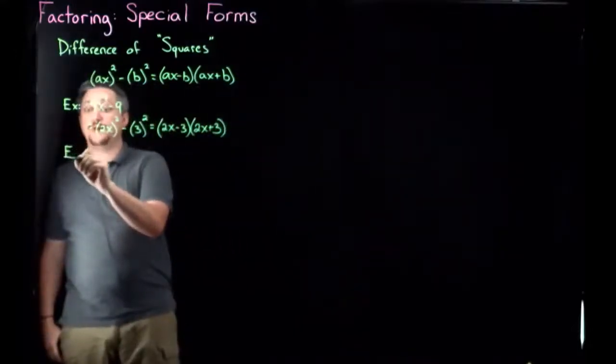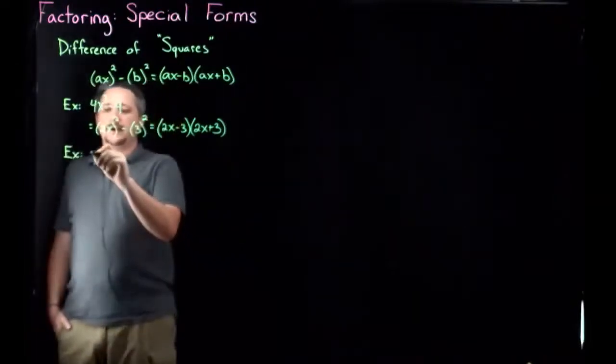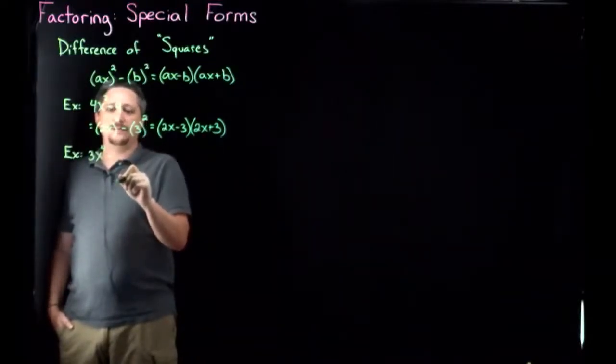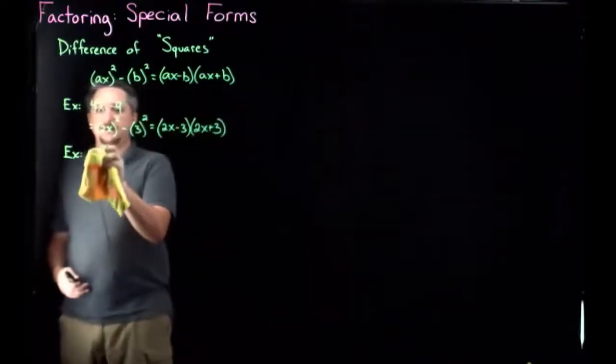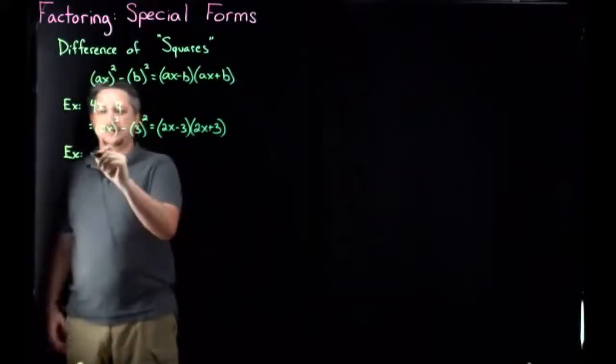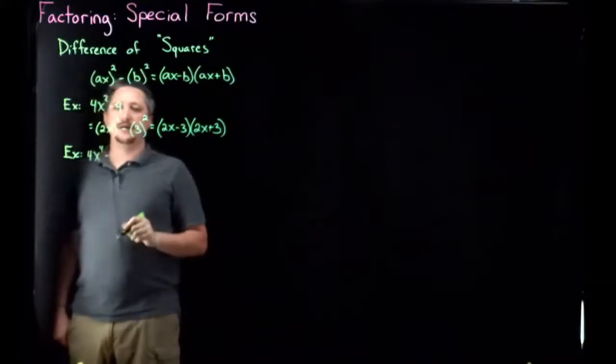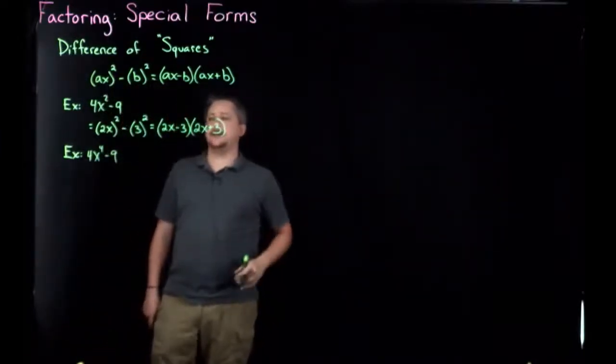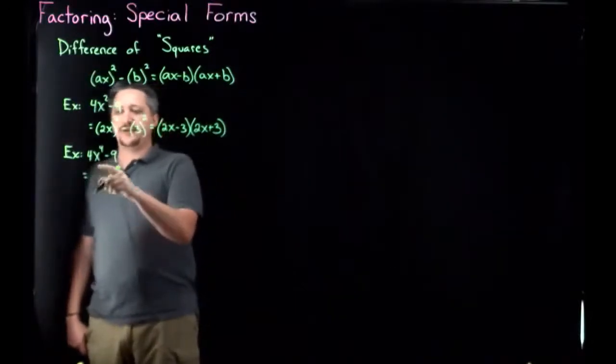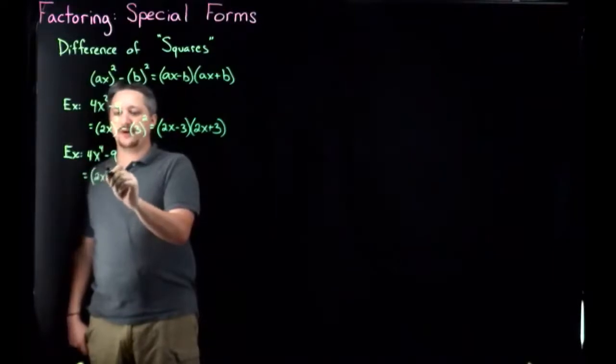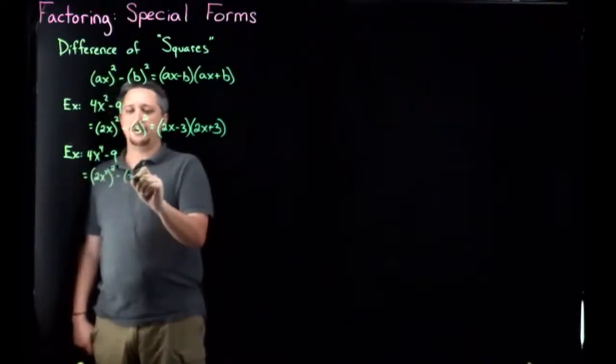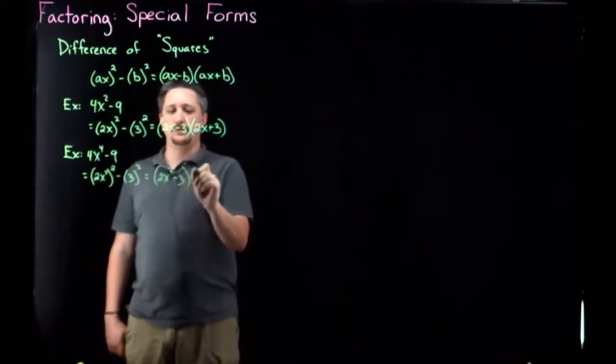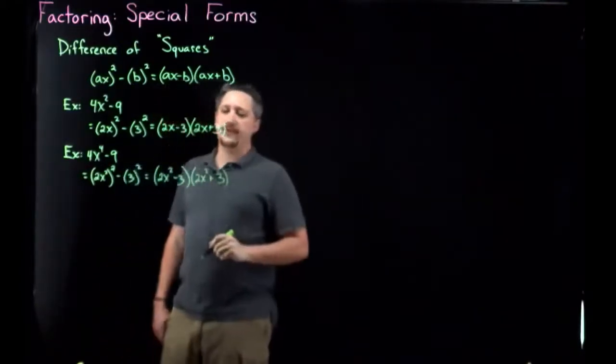Another example, and to show you why I put squares in quotations there, what if I had something like 4x to the fourth minus 9. And my goal here is to factor this completely. So same sort of initial setup, but now it's to the fourth instead of the squared. So my first term is gonna be 2x squared squared minus 3 squared. So this is gonna be 2x squared minus 3, 2x squared plus 3. So far, so good, not very hard, right?